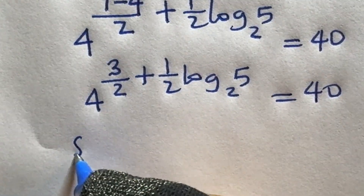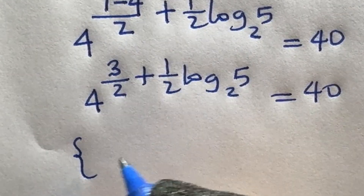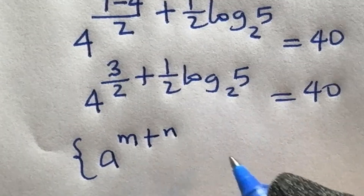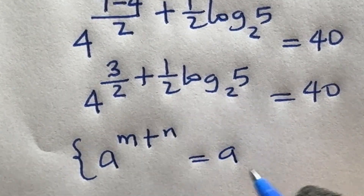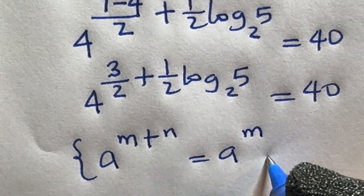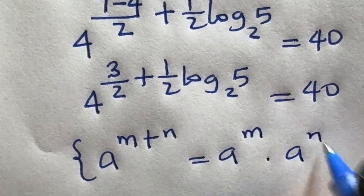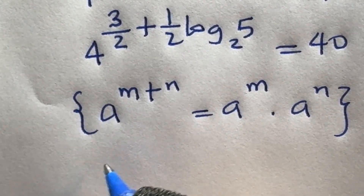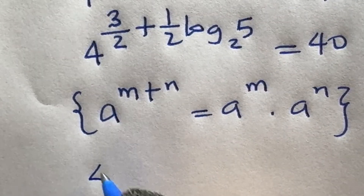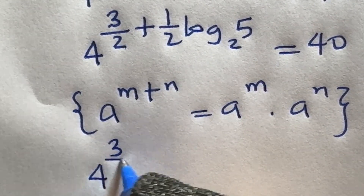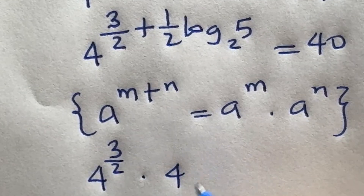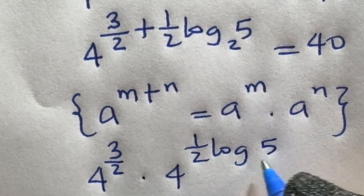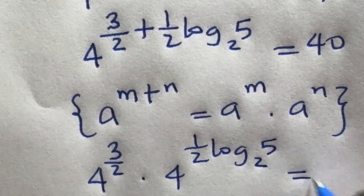By the indices rule, a raised to power m plus n equals a raised to power m times a raised to power n. So we get 4 raised to power 3 over 2 times 4 raised to power 1 over 2 log 5 base 2 is equal to 40.